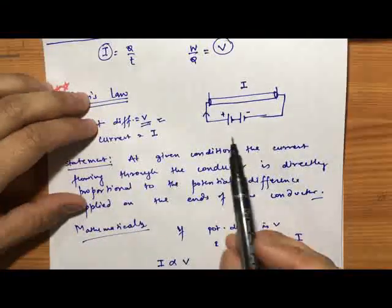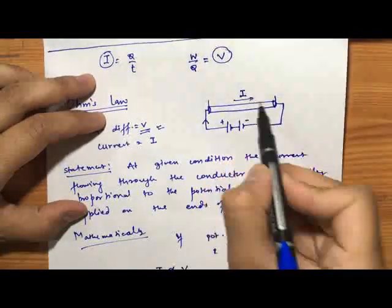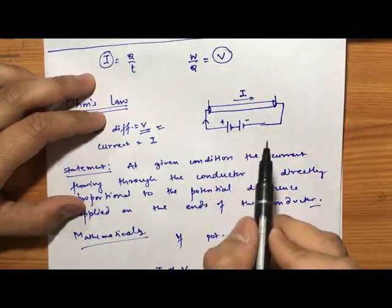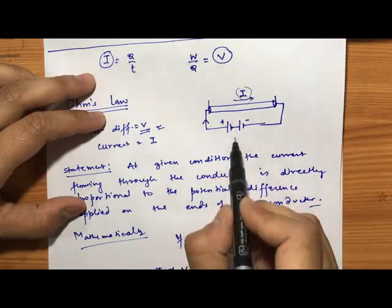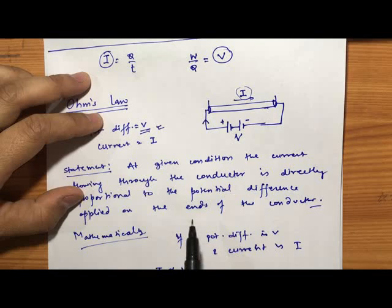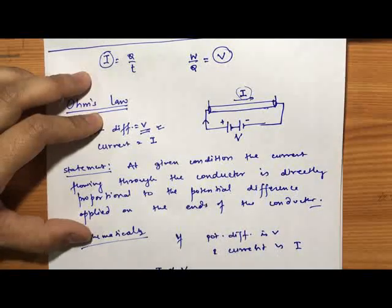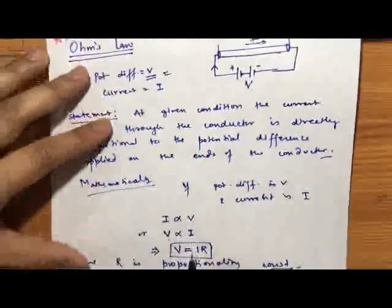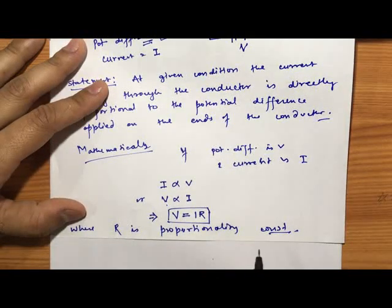So this is the complete statement of Ohm's law. Let us revise it once more. If V is the potential difference across the ends of the conductor and I is the current flowing through the conductor, then the current flowing through the conductor is directly proportional to the potential difference applied across the ends of the conductor. So I write I ∝ V, which implies V ∝ I, and therefore V = IR where R is the proportionality constant.